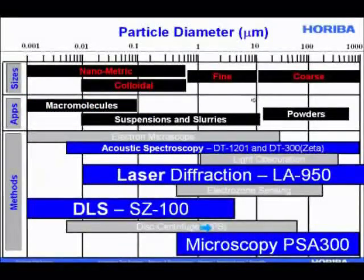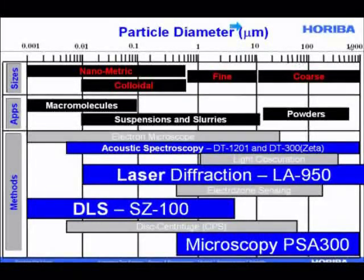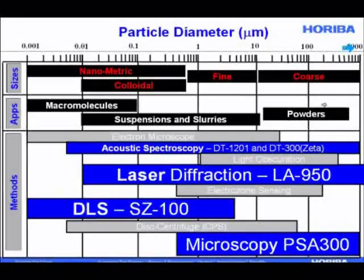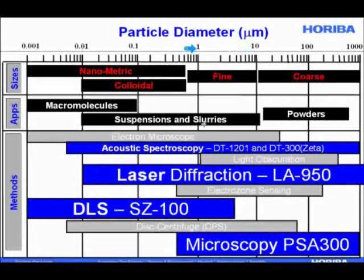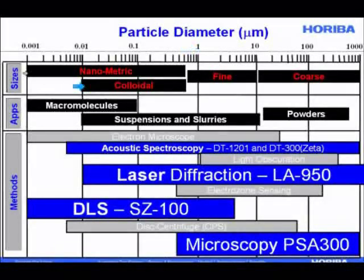Let's get some perspective. Here I'm going to show particle diameter in microns. A one-millimeter particle is fairly coarse. Between 10 microns and one millimeter, you're thinking of coarse powders — sand at the beach, for example. Below 10 microns to one micron, you're thinking of fine powders, suspensions and slurries. As you go below the one-micron limit, you're moving into the colloidal and nanometric size regimes, down to 10 nanometers, and below that you have macromolecules such as proteins or polymers in solution.